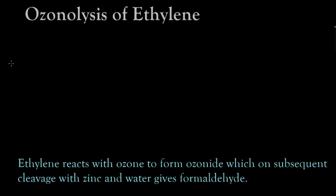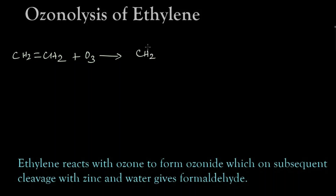Finally, we are going to prepare formaldehyde by using ethylene and ozone. For this we need a terminal double bond compound, that is a terminal alkene. The structure is CH2=CH2, which is ethylene. On treatment with ozone it forms an ozonoid in the same manner as the previous reactions.